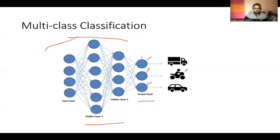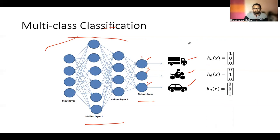This is one example where we have input pictures and we have to identify where it is a truck, a bike or a car. So, how does our hypothesis will look like?